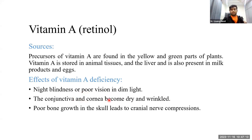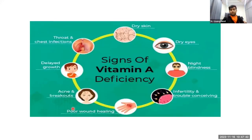Vitamin A deficiency can also lead to poor bone growth in the skull, leading to cranial nerve compression in children. Signs of vitamin A deficiency include dry skin, dry eyes, night blindness, infertility and trouble conceiving, poor bone healing, acne breakouts, delayed growth, and throat and chest infections. Most commonly it manifests as dry eyes and night blindness.